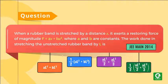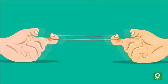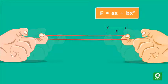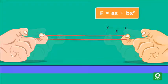We are given that the restoring force applied on a stretched rubber band is given by the relation F = ax + bx², where x is the stretching distance, and we have to find the work done in stretching the rubber band by a distance L.